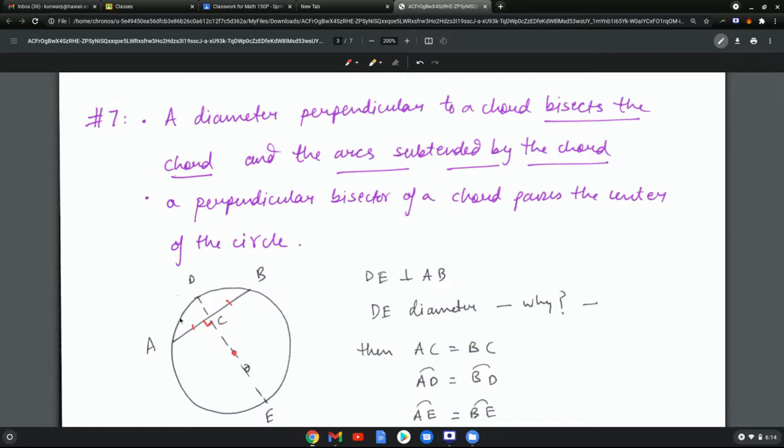In addition, it also does that to the arcs that are subtended by the chord, meaning you also get that the arc AD equals arc DB, and the arc AE equals the arc BE.